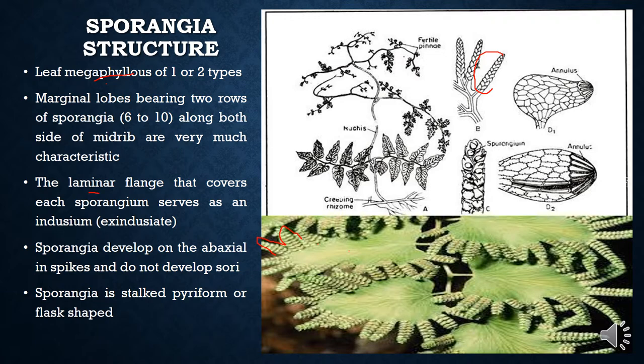Single sporangiate sori are present on either side of the vein on the lower surface of the leaf. The lower surface of the leaf actually folds and forms a laminar flange that acts as an indusium to the sporangium. Usually, indusium is a thin membrane that covers the sporangium to protect it. But here, the leaf lamina folds and curls inward to form this indusiate structure.